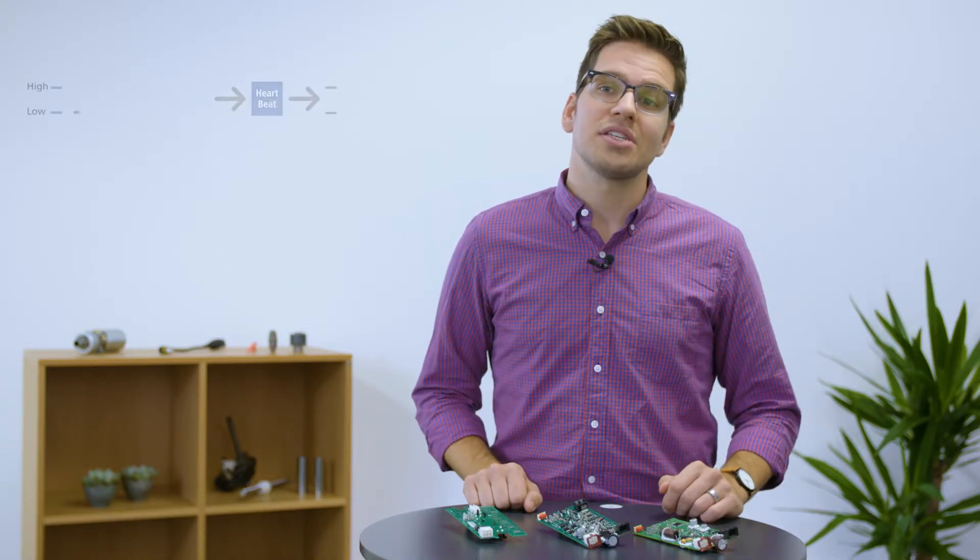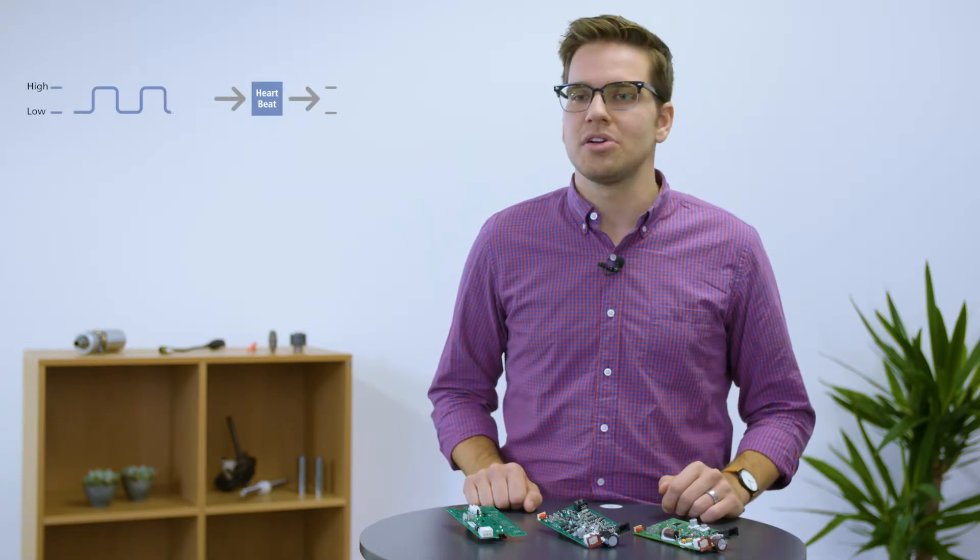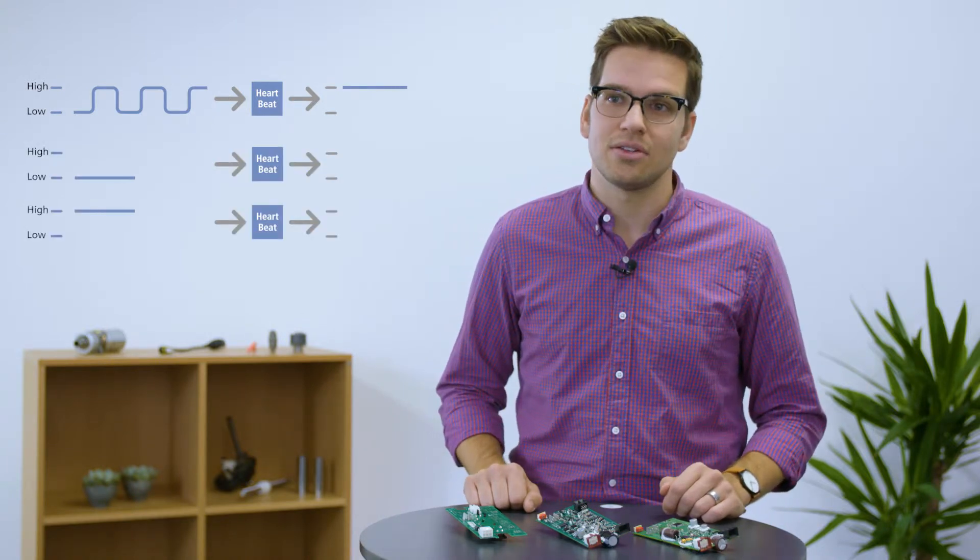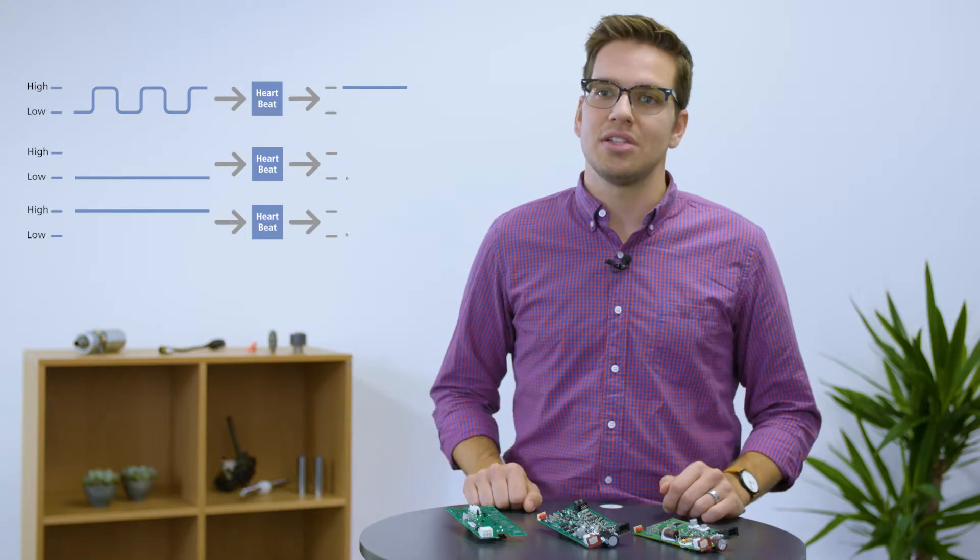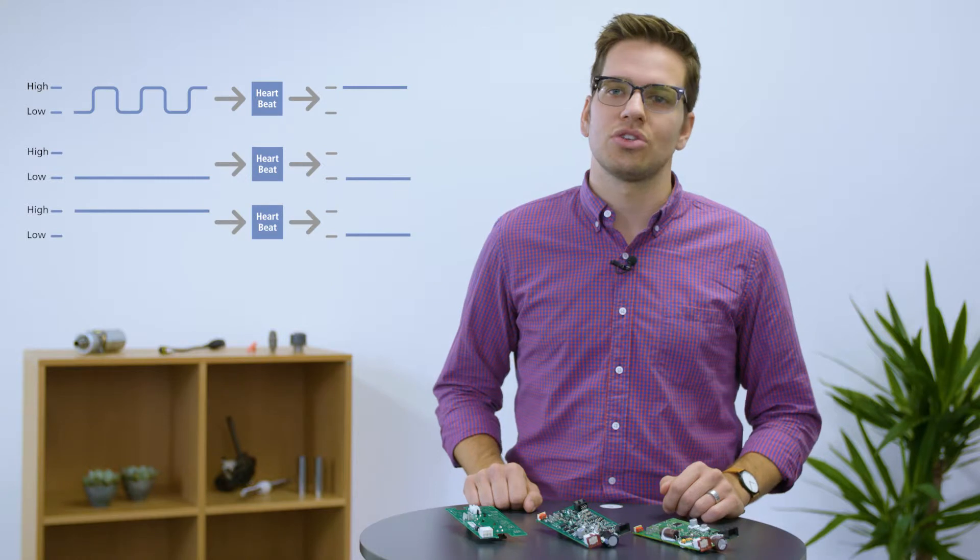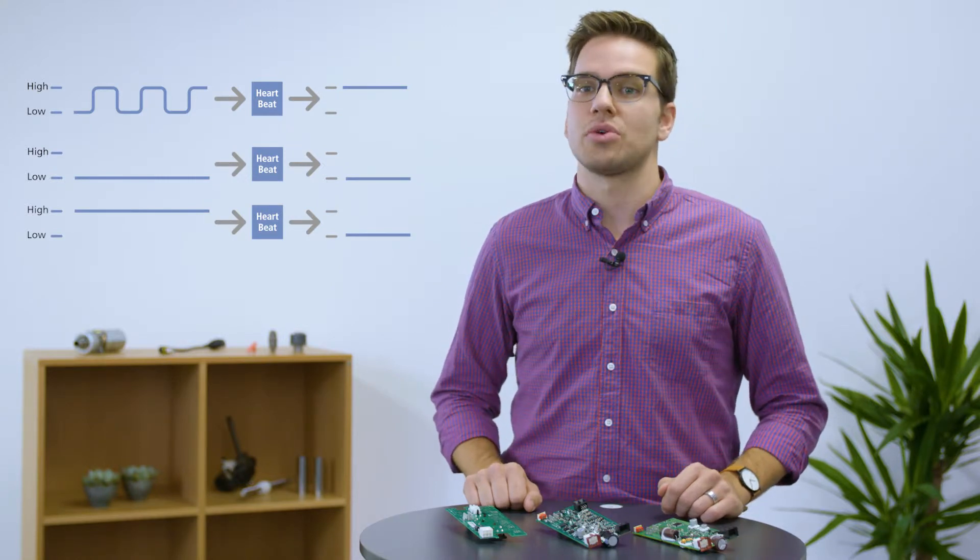It works by measuring a signal from the microcontroller, similar to this. In case the microcontroller cuts out and does not send the signal, the heartbeat will change to this, causing the control logic to react and turn off all transistors in the H-bridge, and the actuator will stop.